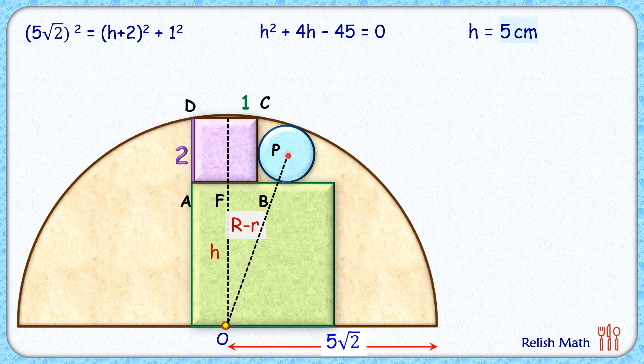Now using this fact we have to form a right angle triangle so that we can find the value of small r. From point P let's drop a perpendicular down.